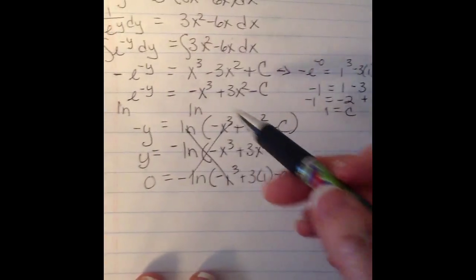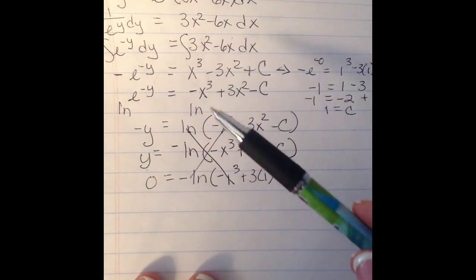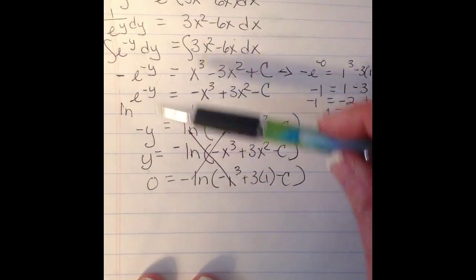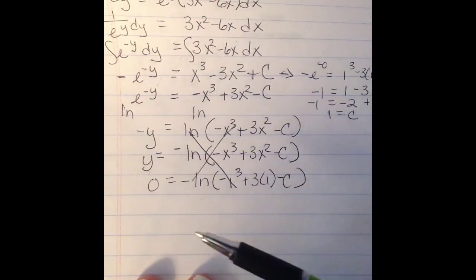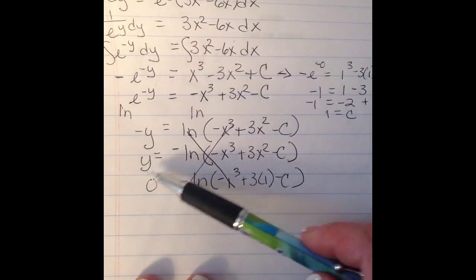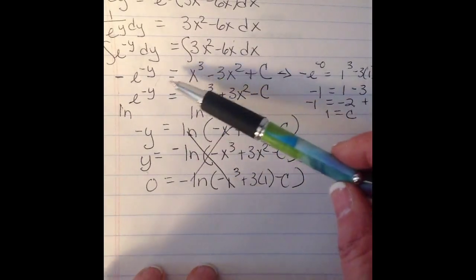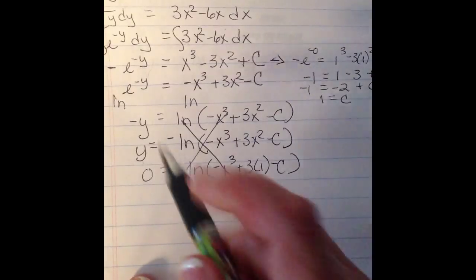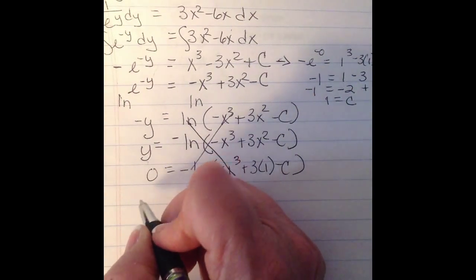So sometimes you have to come back up. And when you try to find your c, you can do it anywhere after you've integrated. So you can try after you've gotten to the bottom and got your y isolated. Or if it doesn't work, you can go back into the original.